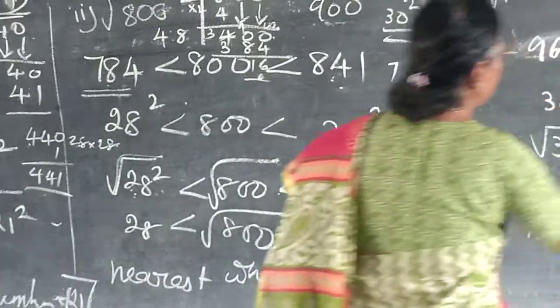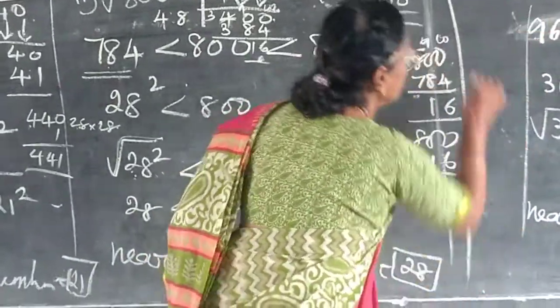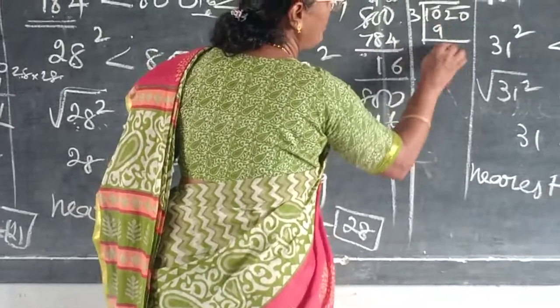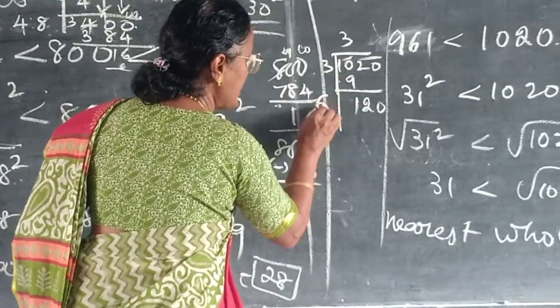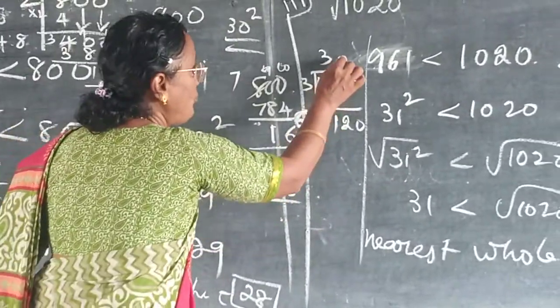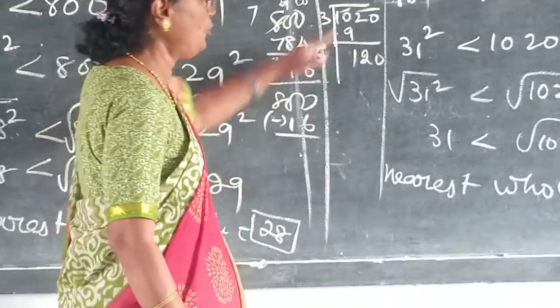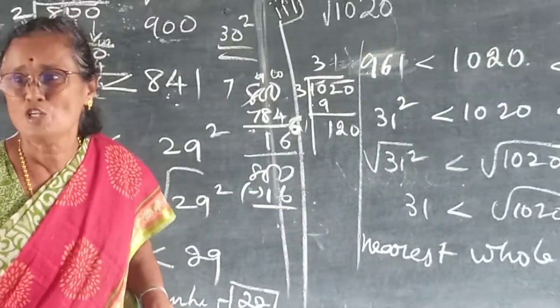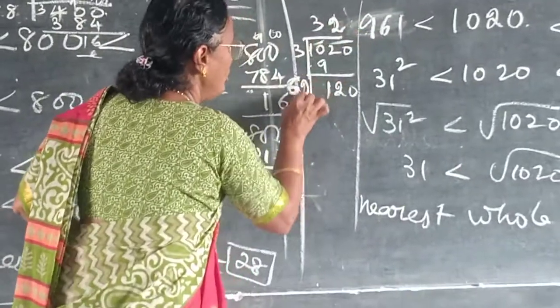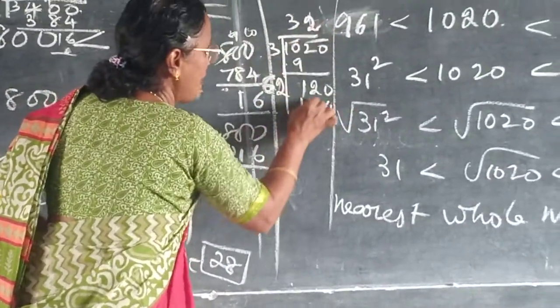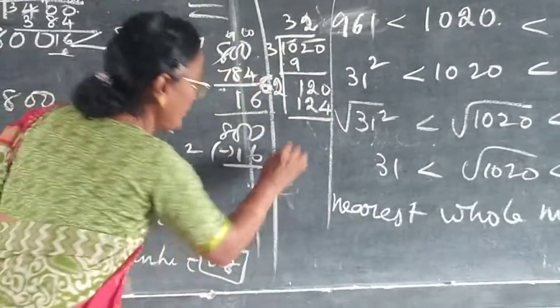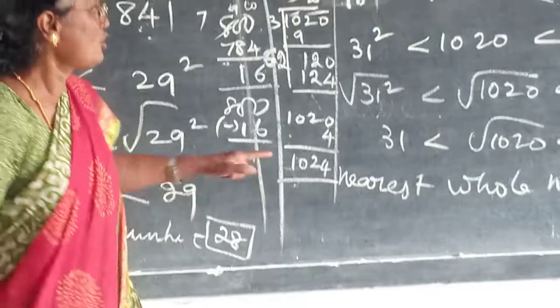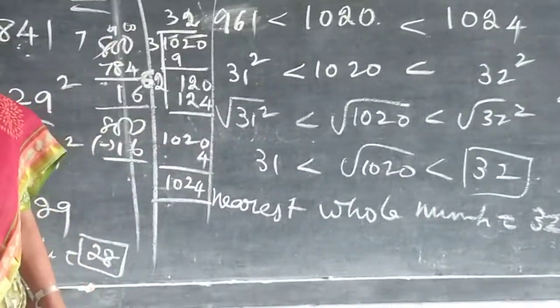Same way for this one, 1020. 1000 and 20. From the last. 3 3's are 9. Reminder 9. 120. 3 2's are 6. If you put 1, 1 into 61 is 61. You should not try. Which one you have to choose? 2. 2 into 62. 2 2's are 4. 2 6's are 12. So 4. So 1020 how much you have to add? 4 should we add? So which is the nearest value? 32 is the nearest value not 31. Do you follow?